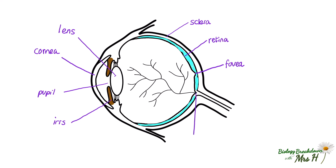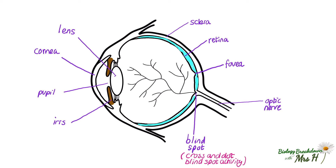There is no retina over the part where the optic nerve leaves the eye. Because there is no retina here, this is called the blind spot. Any light falling on this part of the eye will not be part of an image that we can see. Google the cross and dot blind spot activity — it's really fun.